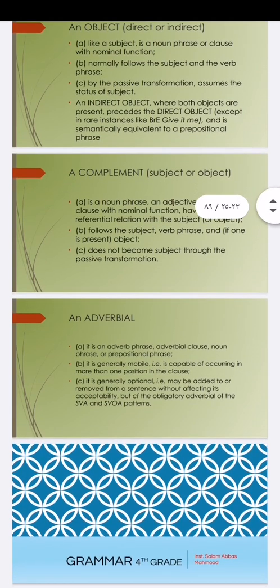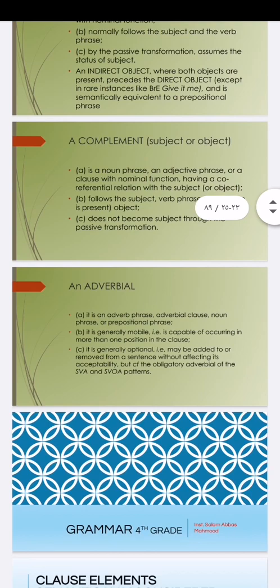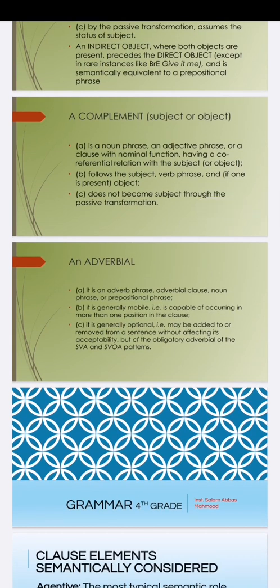The adverbial is either an adverb of place or time. For example: 'I found a pen on the table' — adverb of place; 'I have a date on Friday' — adverb of time. We can convert SVA patterns to SVOA — Subject Verb Adverb becomes Subject Verb Object Adverb — through different sentence patterns.